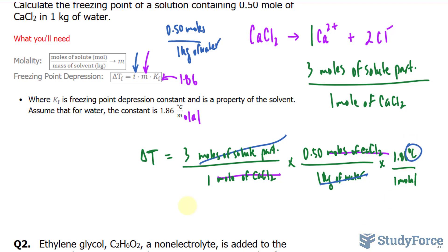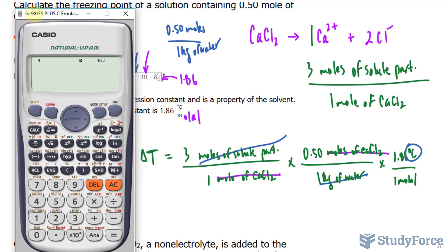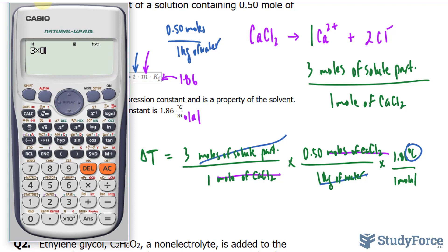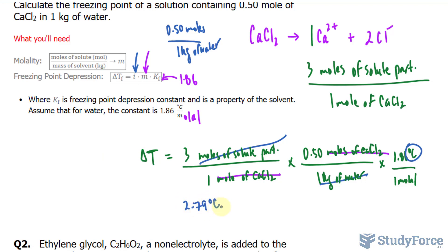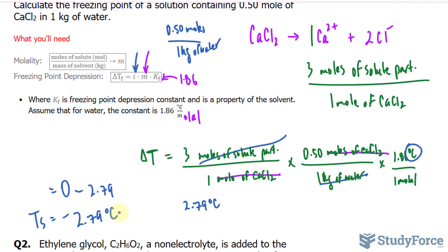Using our calculator, we can type in 3 times 0.50 times 1.86, and we get a change in temperature of 2.79 degrees Celsius. Now remember, water freezes at 0 degrees. So what this is telling us is that ice will end up melting not at 0 degrees, but at 2.79 below that. So we subtract 2.79, and we end up with the temperature of the solution of negative 2.79 degrees Celsius. This is why salt is added to ice — so that the melting point of ice decreases and it makes it easier to melt.